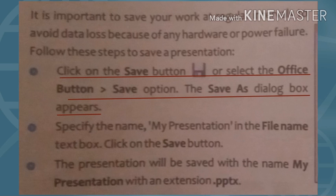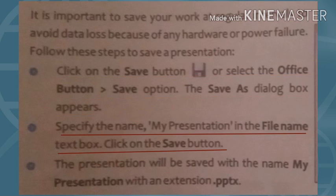There are two methods to save your file. First, click on the Save button on the Quick Access Toolbar. या फिर Office button पे click करेंगे, वहाँ से Save option को pick करेंगे — जैसे हम click करेंगे, Save As dialog box open हो जाएगा। Specify the name 'My Presentation' in the file name text box, then click on the Save button.